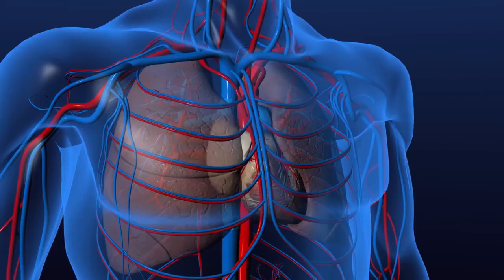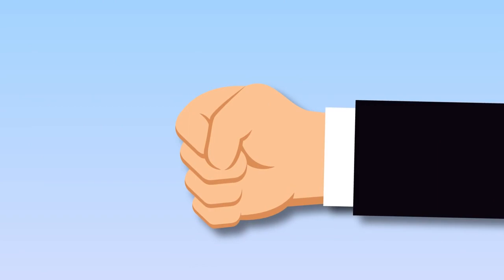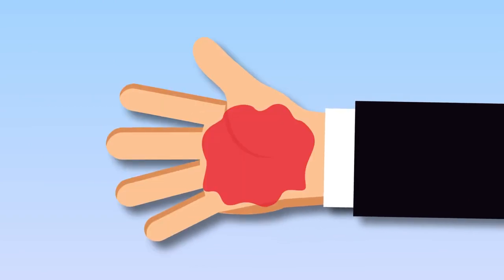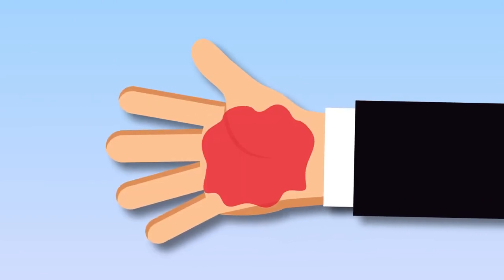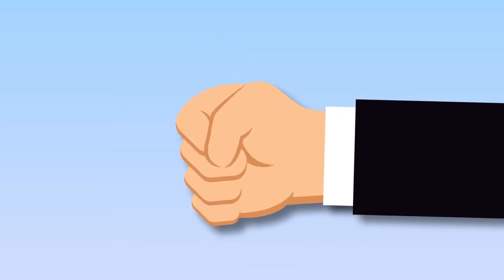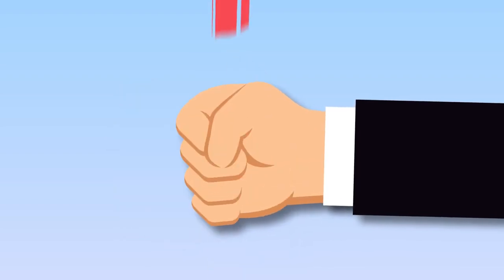To understand how our heart beats, we only need to imagine that our hand is a heart. And that when it opens up, it fills up with blood. And when it's closed, it pumps that blood outwards.